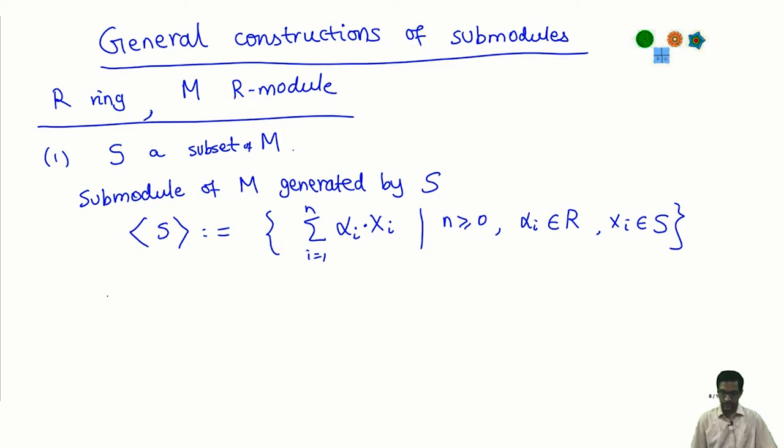Observe that it is easy to check that this is in fact a submodule. The submodule generated by S, this set here on the right hand side is closed under addition because you add two such terms you again get another linear combination and if you multiply such a linear combination on the left by some element of the ring, you just get some other set of scalars, some coefficients in front. So this is a submodule.